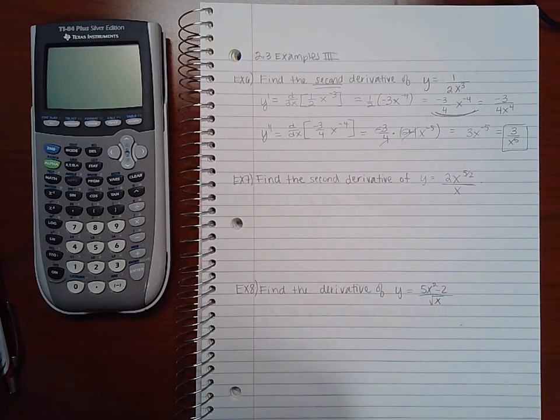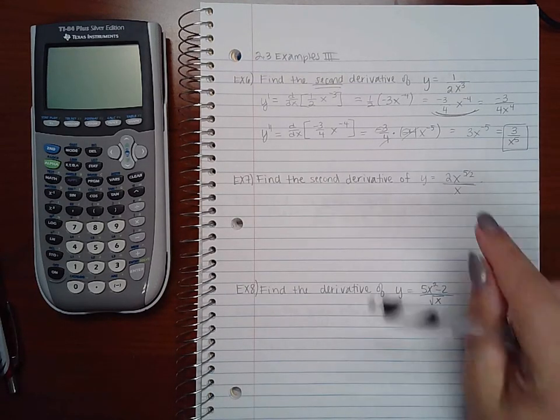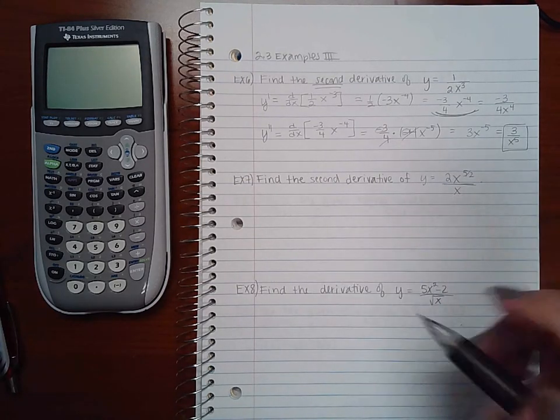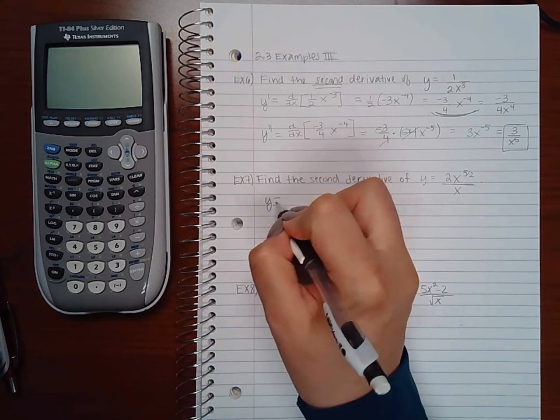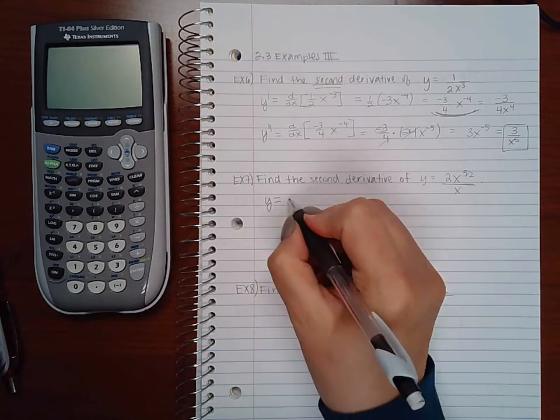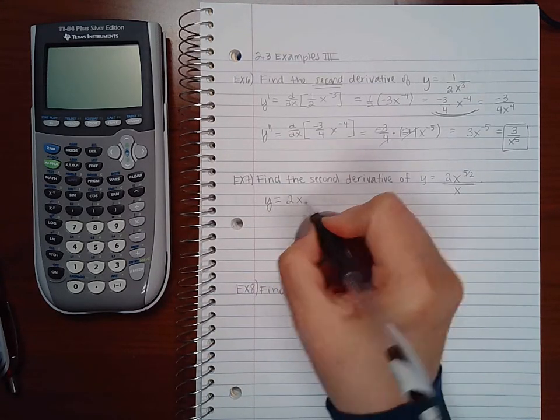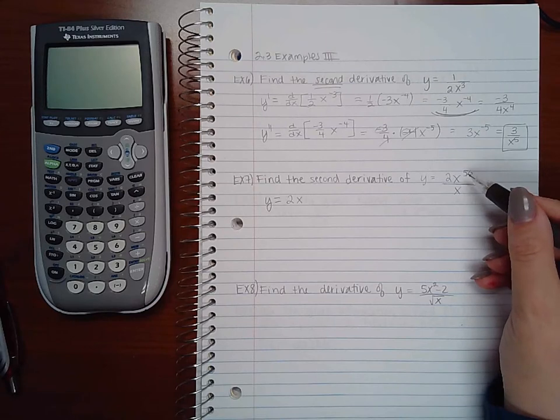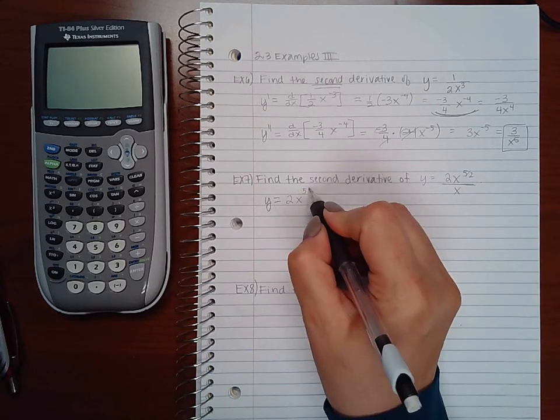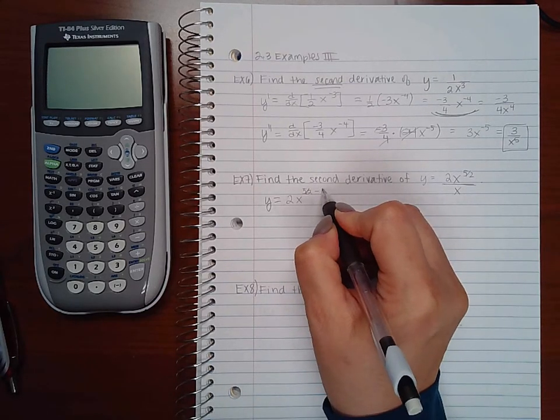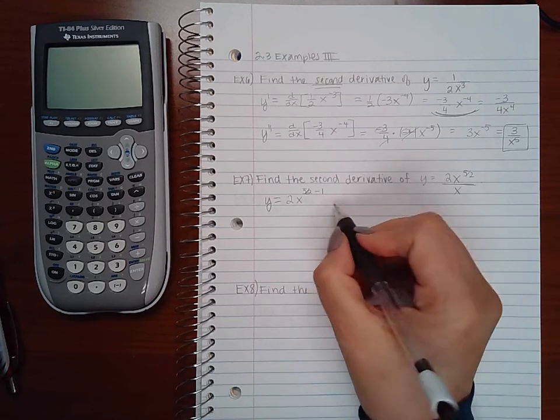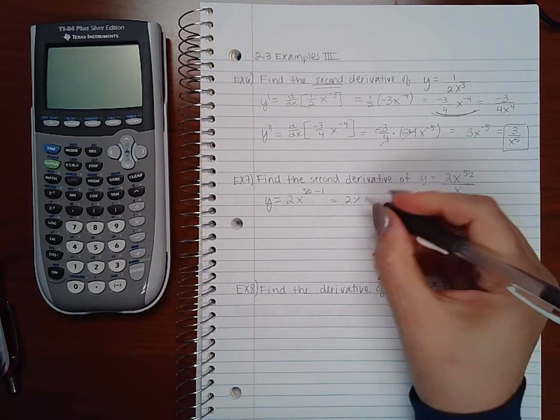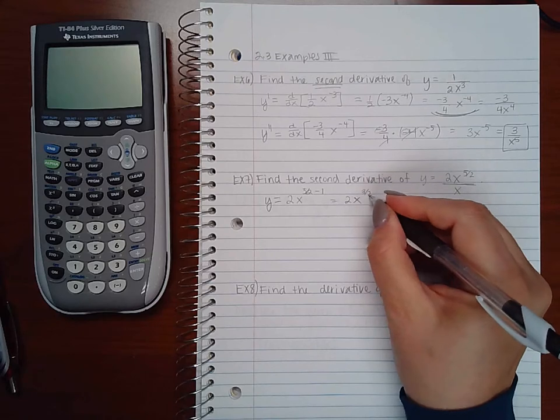That is the second derivative. For example 7, very similarly, except this I can reduce before I take the derivative. So before I take the derivative, I'm going to do x to the... And when you're dividing fractions, it's always the top exponent minus the bottom exponent. So I get x to the 3 halves.